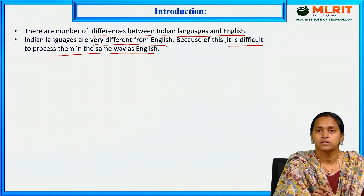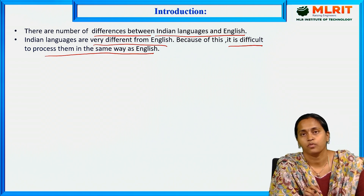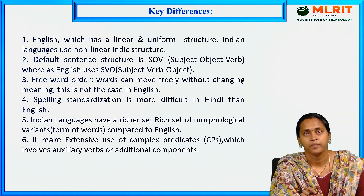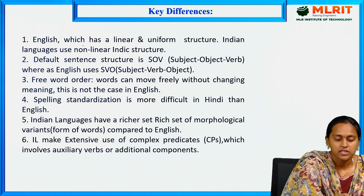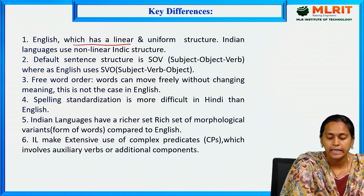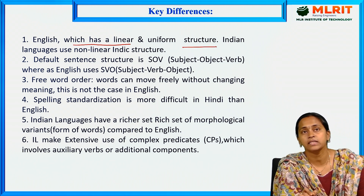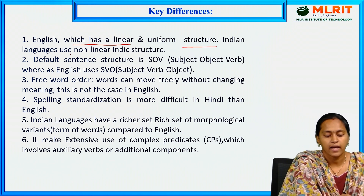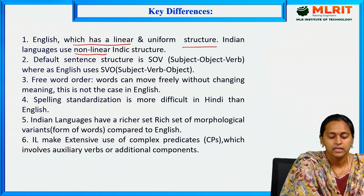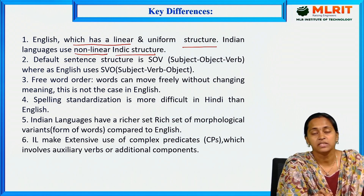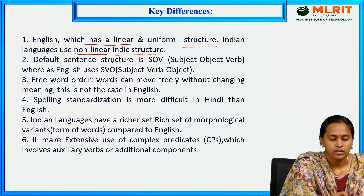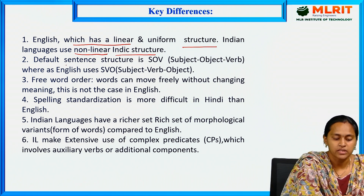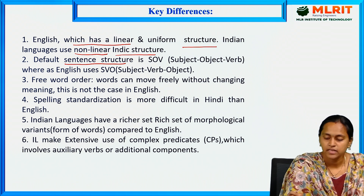The key differences are: English has a linear structure, meaning an easy structure. Indian languages have a nonlinear, Indic structure, meaning a more difficult structure. The default sentence structure in Indian languages is SOV — Subject, Object, Verb.